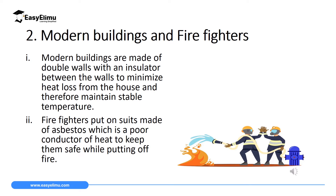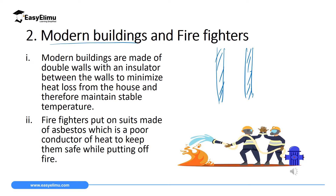Another application of good and poor conductors of heat is in modern buildings which have double walls. Modern buildings have double walls — a first wall and a second wall. In between these walls we have an insulating material, which is a poor conductor. The walls themselves are made of concrete, and concrete is a better conductor of heat than the insulating material placed between them.